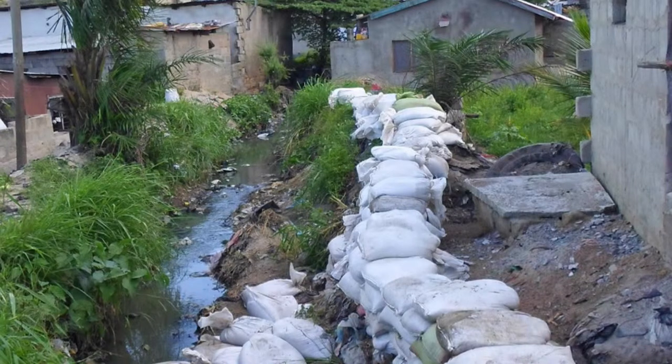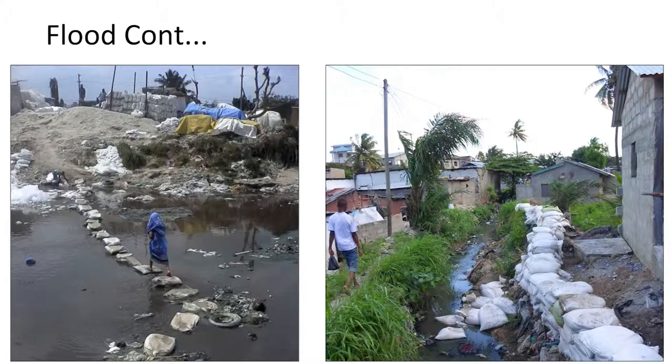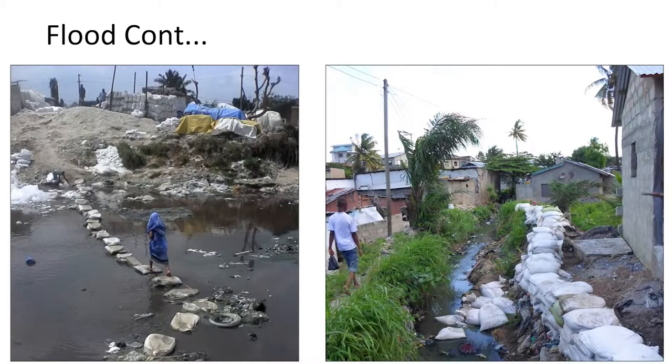What are the immediate measures we take when it floods? We fill sacks with sand and place them so people can pass. As you see, these are the immediate measures we take when it rains and when the floods come. People protect their walls with sand-filled sacks, and we try to make a path for people to reach their destinations.